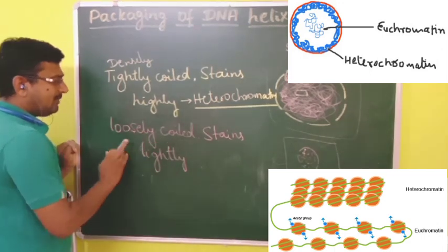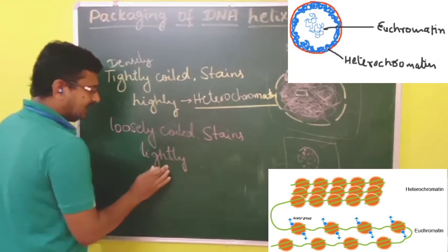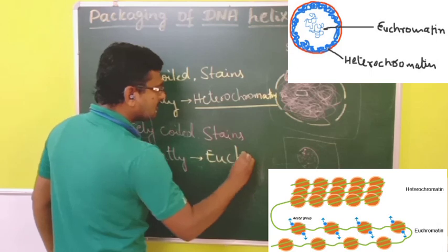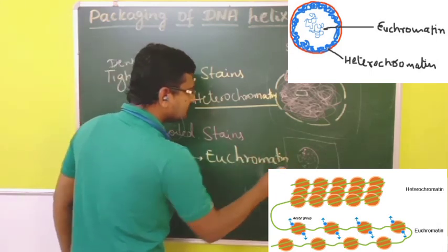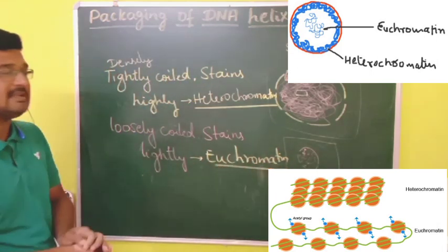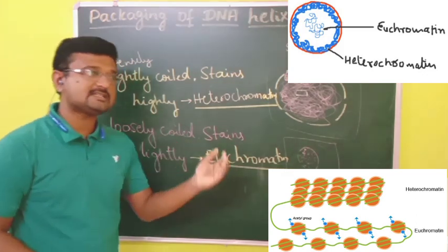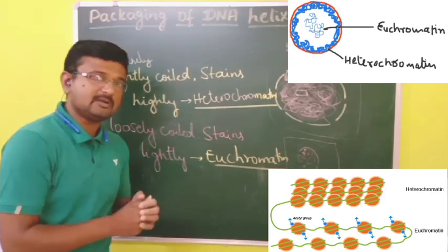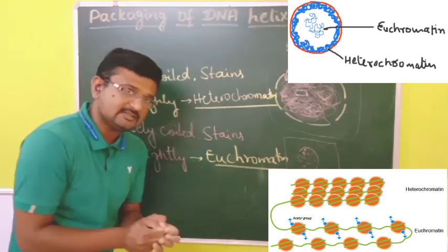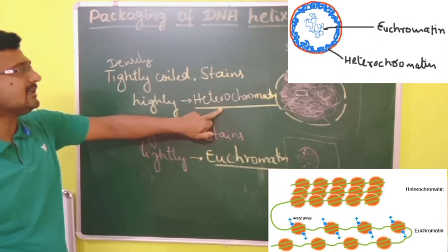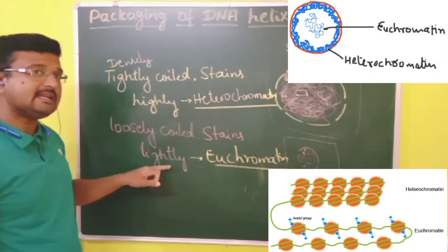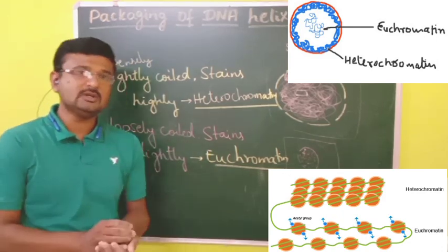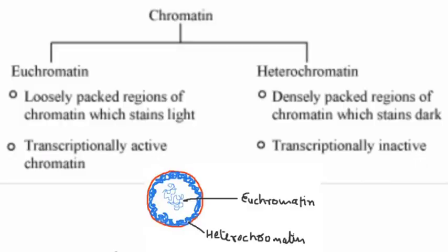Loosely coiled chromatin stains lightly because it is loosely coiled, and this is called euchromatin. So chromatin can be classified into two types: heterochromatin (densely coiled, stains heavily) and euchromatin (loosely coiled, stains lightly).